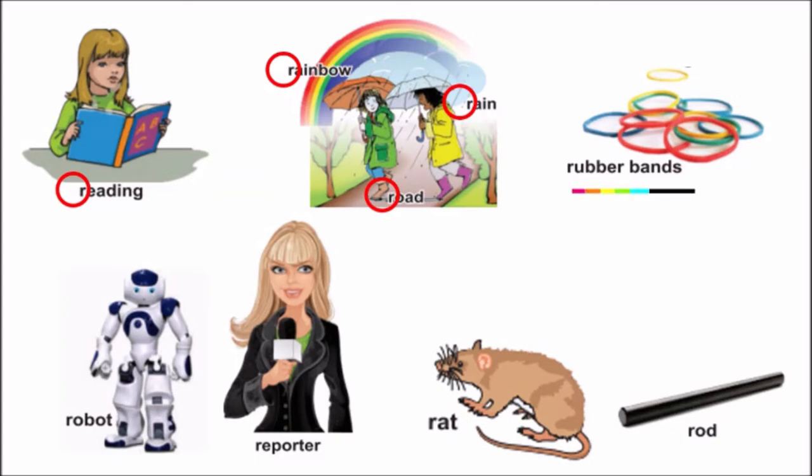Now find R in rubber bands. Very good. R, R, robot.